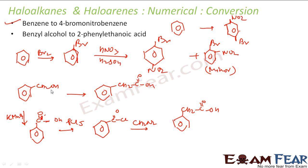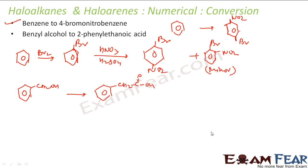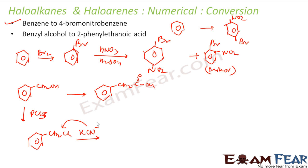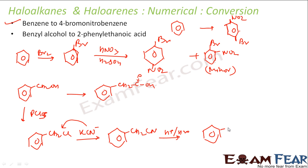Method 2 (better): React benzyl alcohol with PCl5 to get benzyl chloride (PhCH2Cl). Then react with KCN (a strong nucleophile, CN⁻) — cyanide replaces chlorine by SN2 to give benzyl cyanide (PhCH2CN). Finally, hydrolyze with H⁺/H2O to get 2-phenylethanoic acid (PhCH2COOH). This is the preferred method.